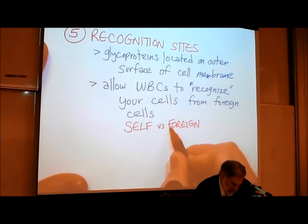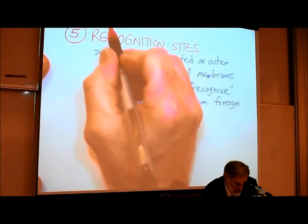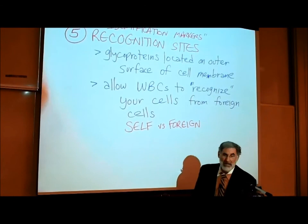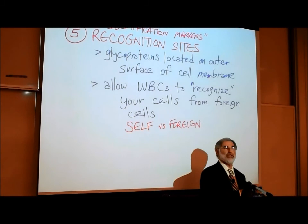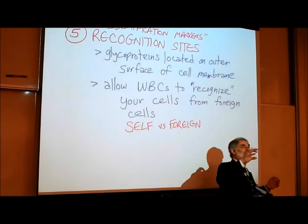Not only would a bacterial cell not have the correct identification markers, but what if we transplanted a kidney from one person into another person? That kidney is made up of foreign human cells, and no two humans have the exact same identification markers — unless they have an identical twin.